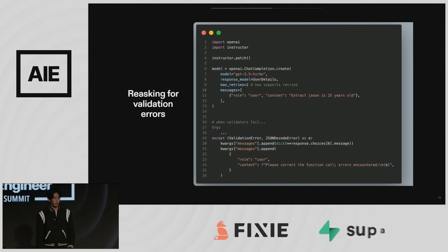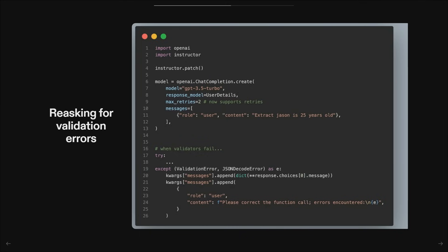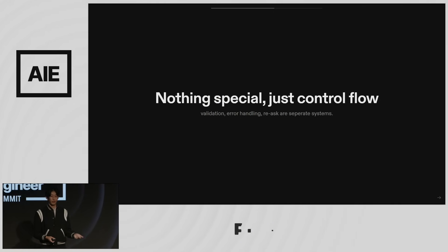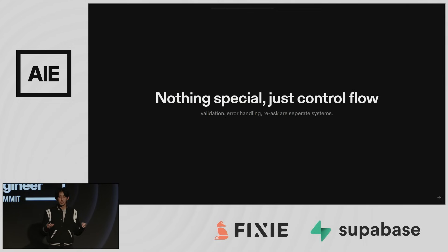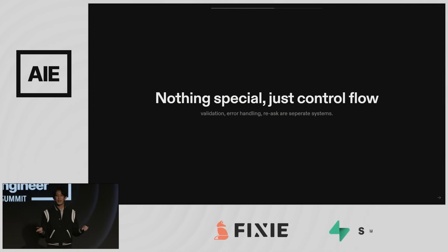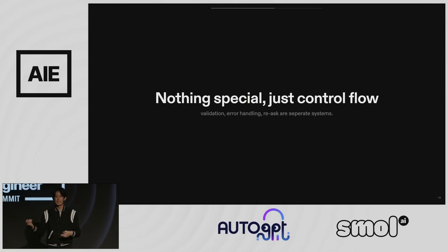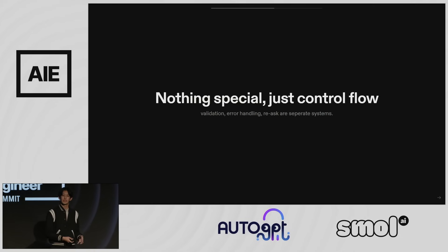It's not enough to just point out errors — you also want to fix them. The easy way to do that in Instructor is to just add max retries. We append the error message you had before, capture all the validations in one shot, send it back to the language model, and try again. This isn't prompt chaining or constitutional AI — it's just validation, error handling, and re-asking. These are separate systems in code we can manage. If you want only five properties, you add an index and say 'count them out, stop at five' — much more reliable outputs.